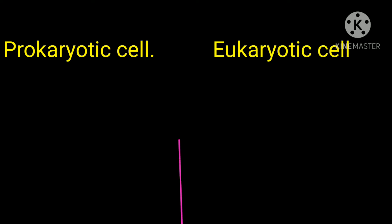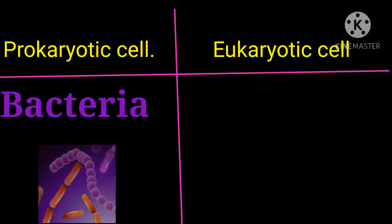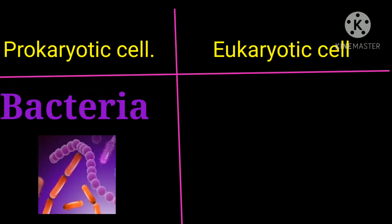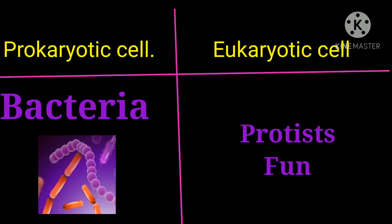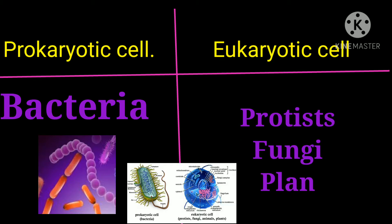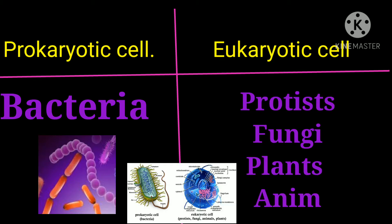Prokaryotic cells include bacteria, and eukaryotic cells include protists, fungi, plants and animals.